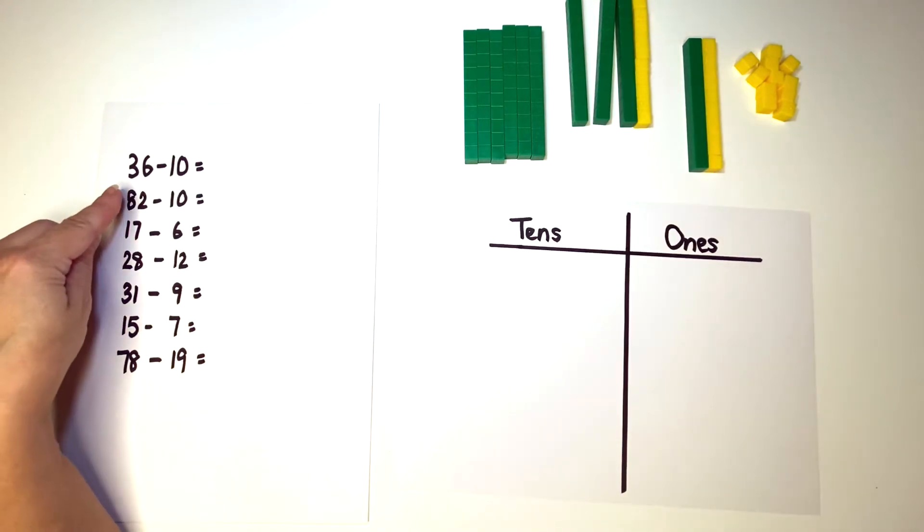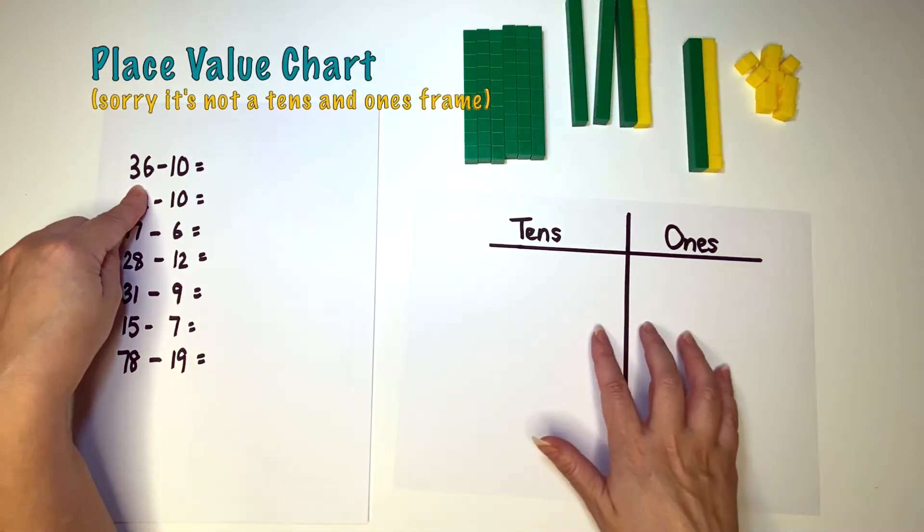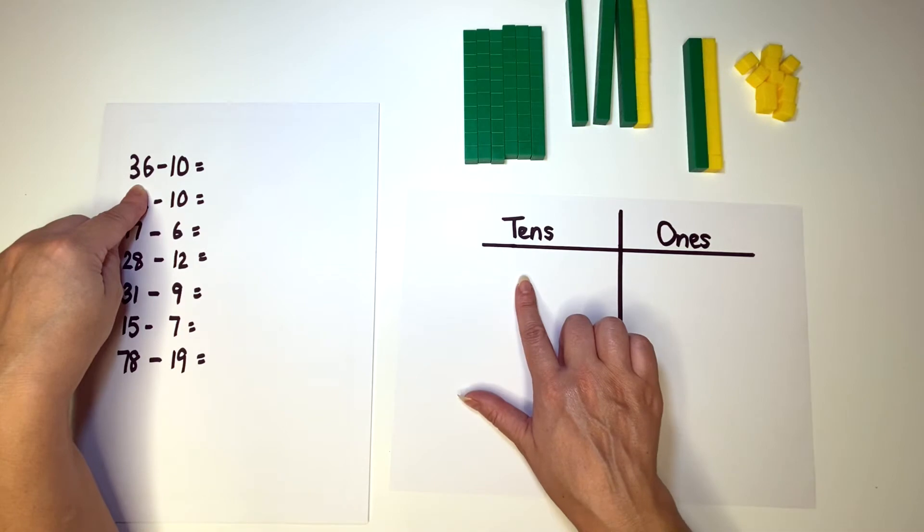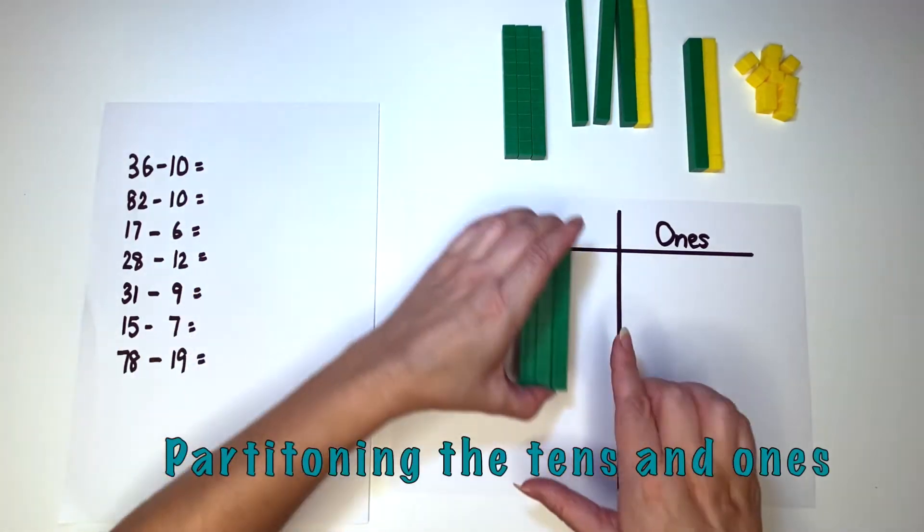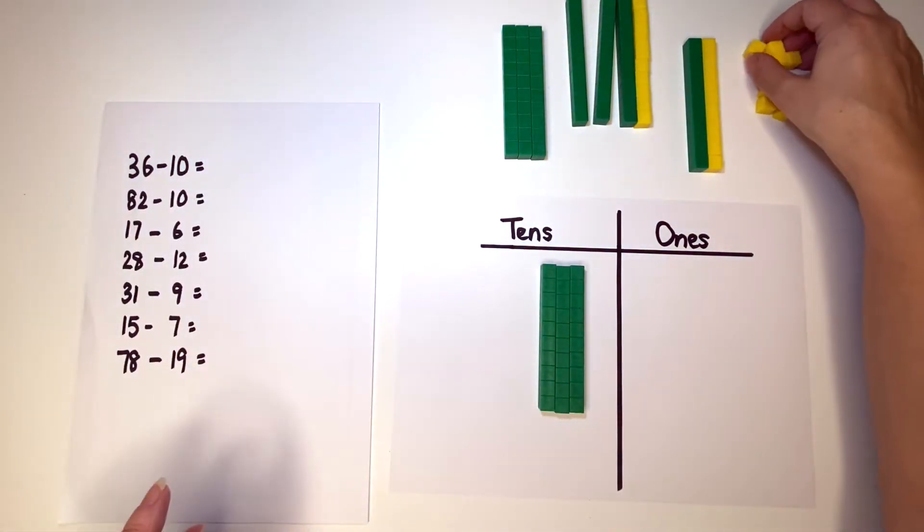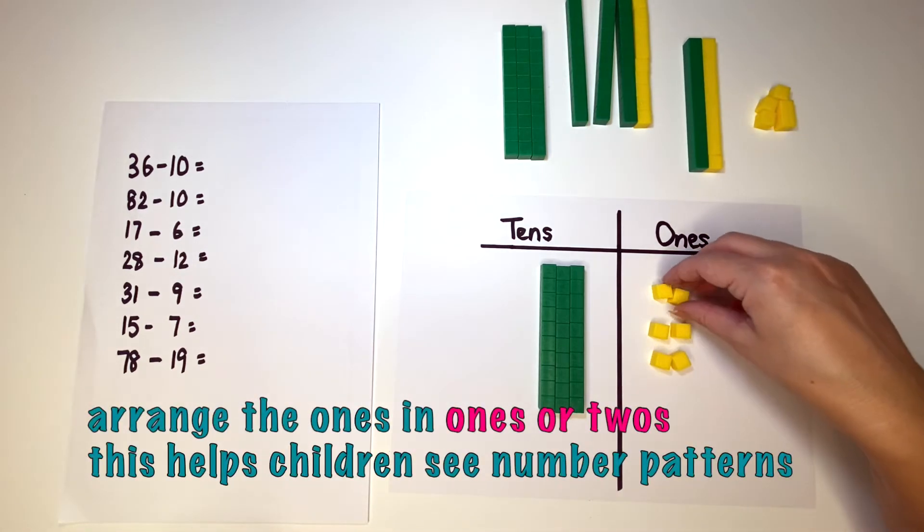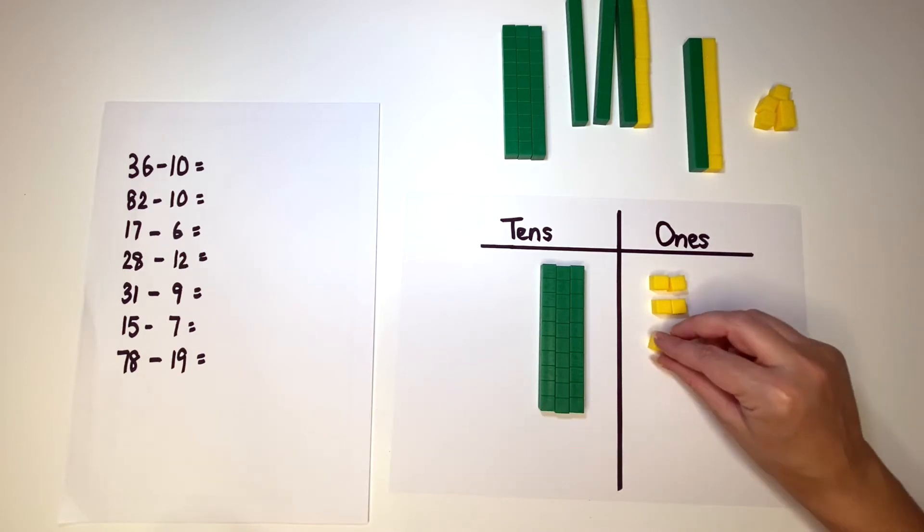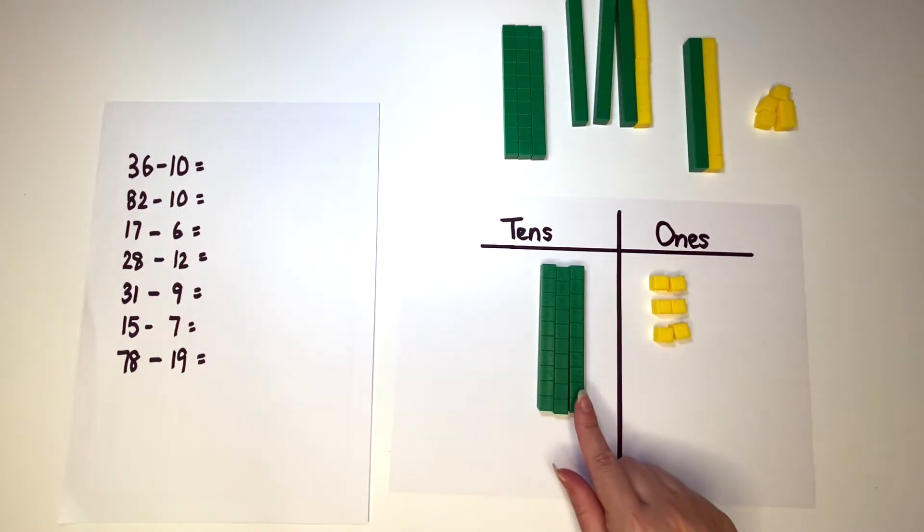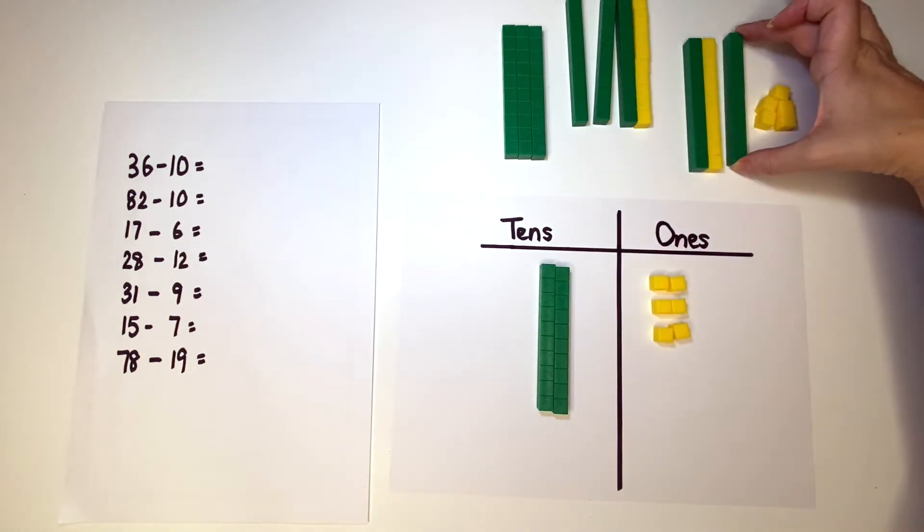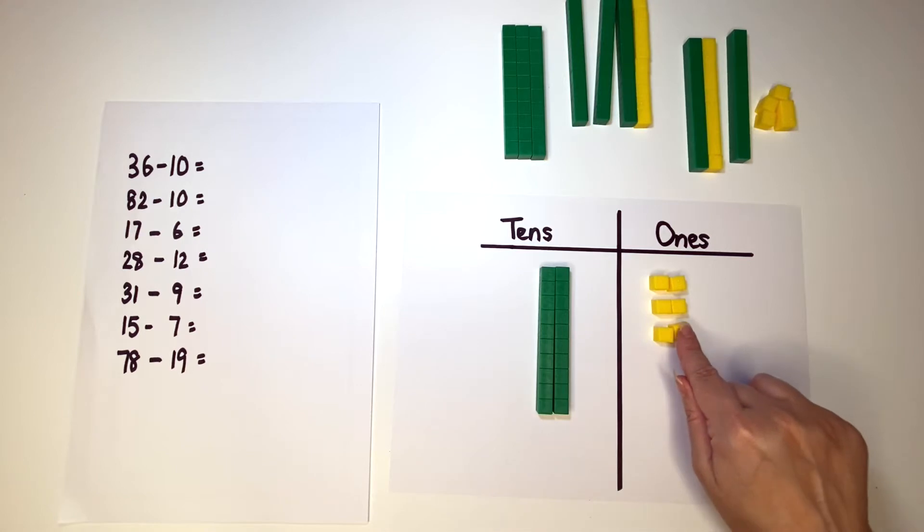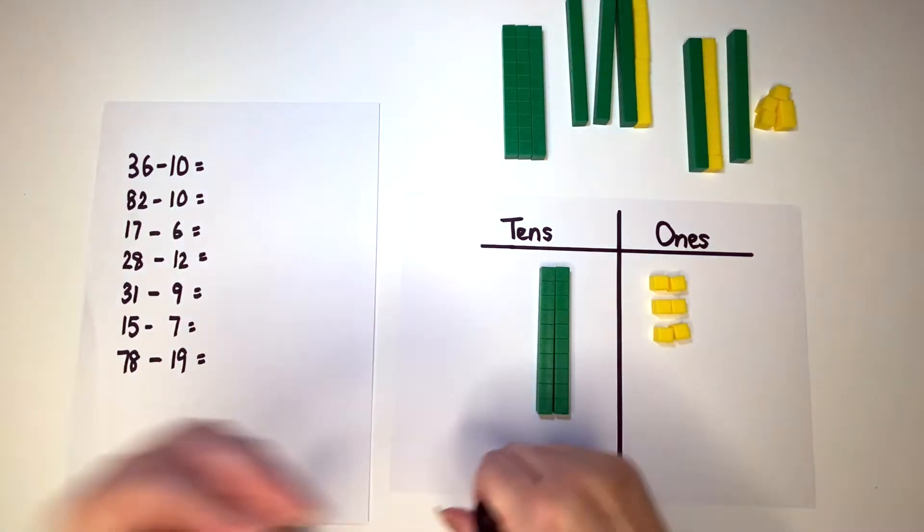Our first number sentence is 36 minus 10. When they're making up on the tens and ones frame they need to make up three tens so they're partitioning the 36 and six ones. Two, four, six. It's a good idea to try and show it in twos or ones so they can see the numbers and see those number patterns. So 36, take 10 away. I'm just going to take one of my ten rods away and my answer is one, two and six. So 26. Two tens and six ones.